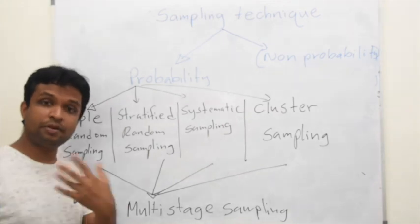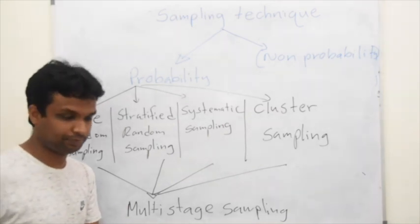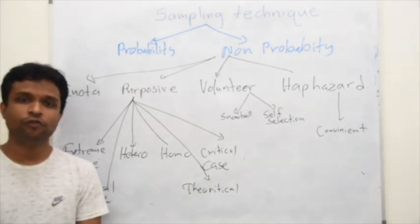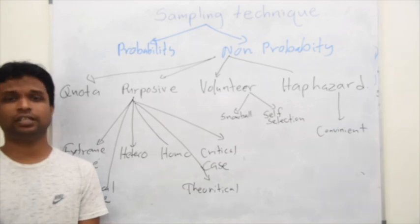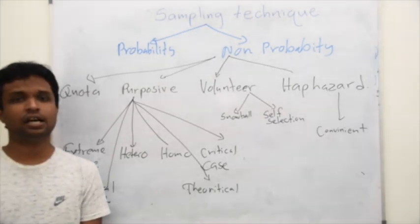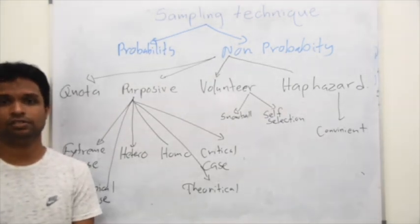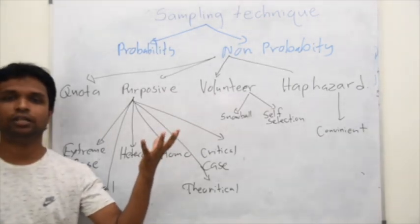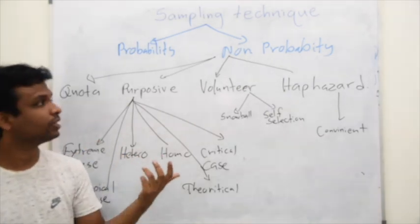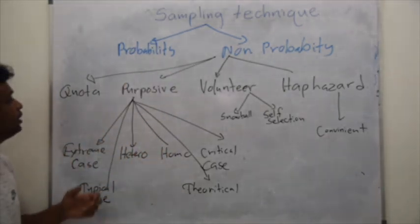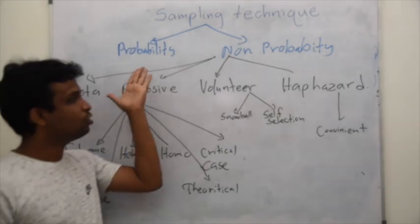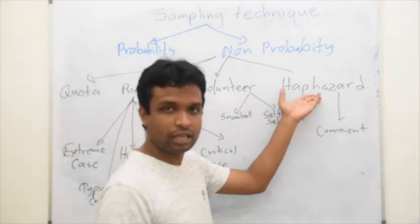Let's consider what are the non-probability sampling techniques. Unlike probability sampling techniques, different books have mentioned different types of names and different techniques for non-probability sampling. All those theories are based on the objective of the research. I will give you one classification, but when you are reading books, you may see some different types of specifications. Here, in non-probability sampling techniques, we have quota sampling technique and purposive sampling technique, volunteer sampling technique, and haphazard sampling technique.